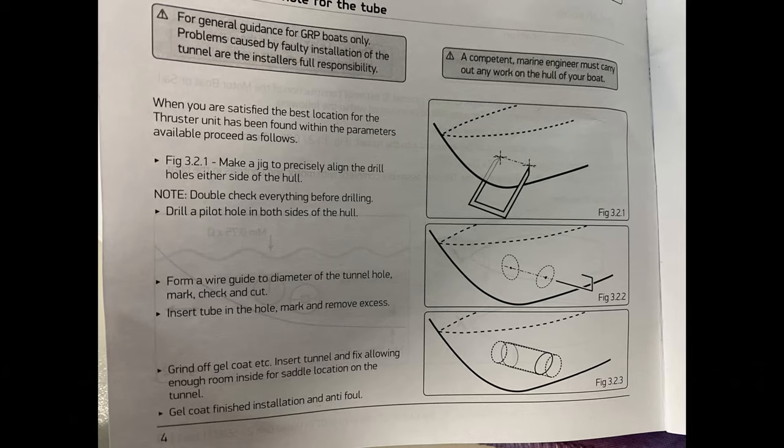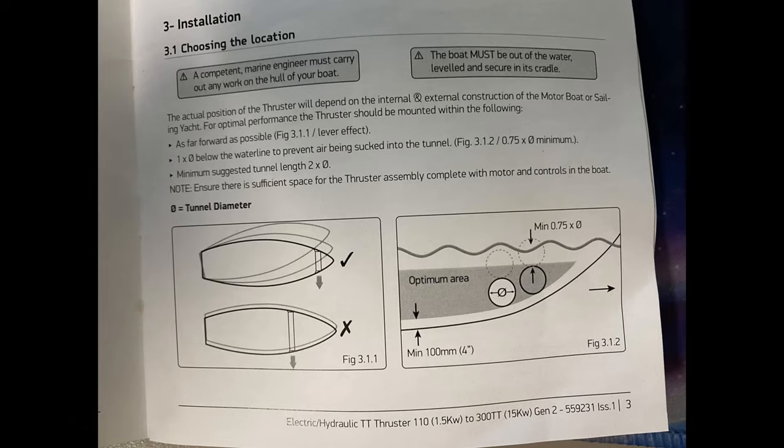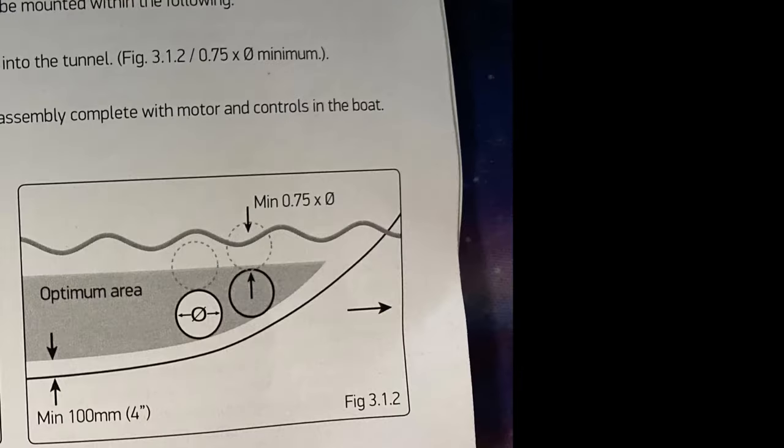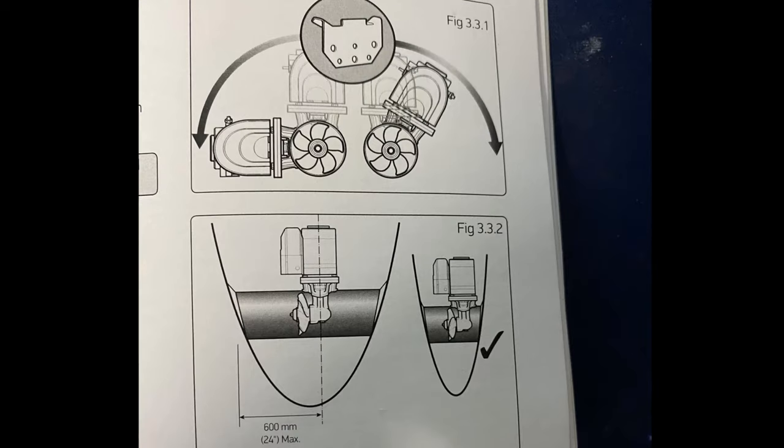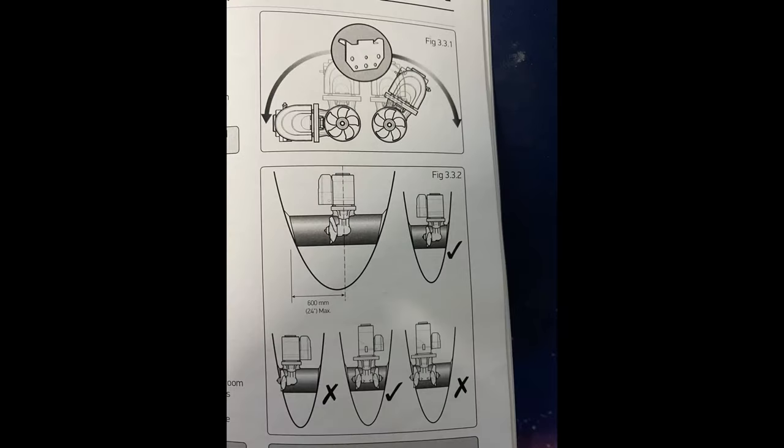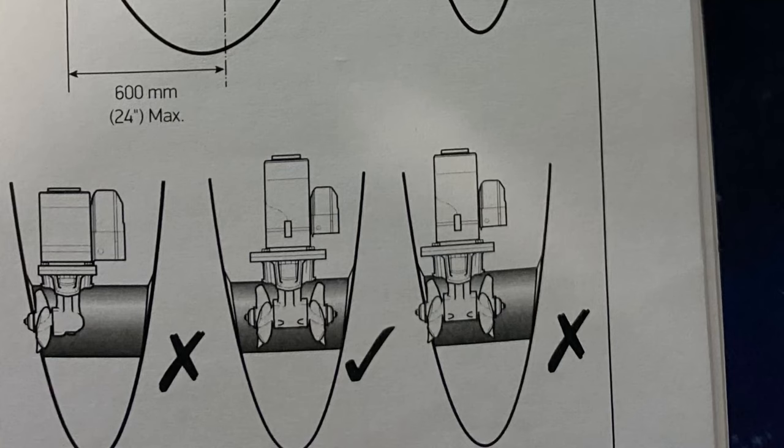The summarized version of the instructions is that you should mount it as far forward as possible to help leverage. It shouldn't be mounted too high otherwise it'll suck air and cavitate. The minimum tunnel length should be twice the diameter of the tunnel. The motor can be mounted either side and in any position around the tunnel as long as the prop is in the center of the tunnel.